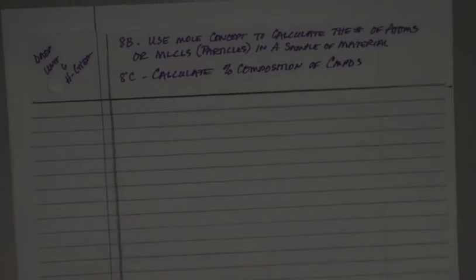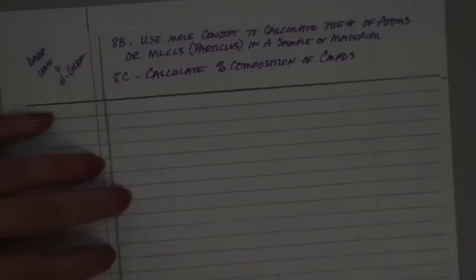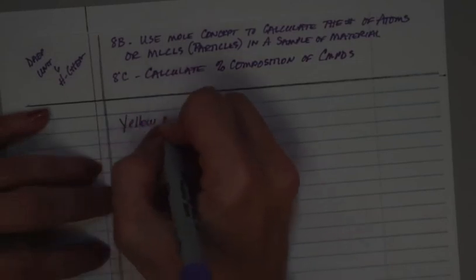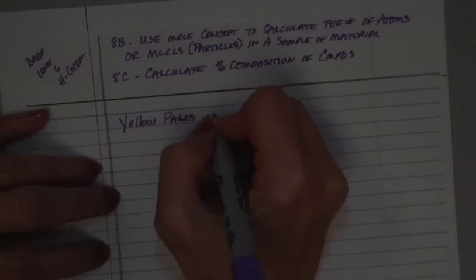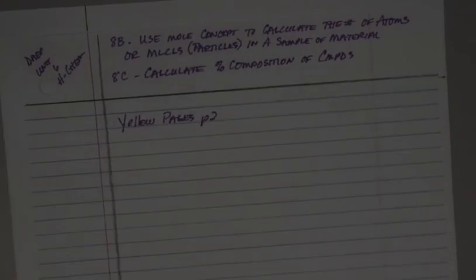Okay, so the first thing you need to do is you need to look at your yellow pages, page 2. Because this actually has the calculations that you're going to be doing. You don't have to memorize this stuff. You have to be able to use your yellow pages. Once you do this often enough, you'll be able to do this.